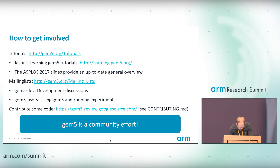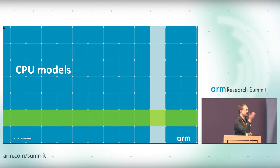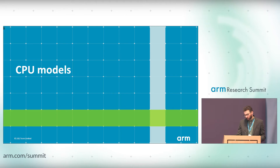Because we're a bit short on time, I'm going to skip straight to what I find the more interesting part of this talk — an overview of the CPU models and memory system — and hand over to Nikos. Thank you, Andreas. With the background Andreas provided, I'd like to spend a few minutes on a high-level overview of the most basic models we have within gem5.